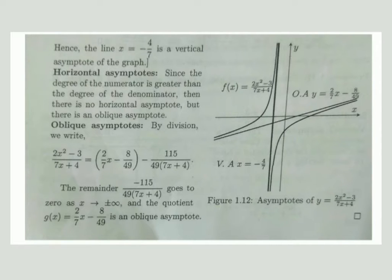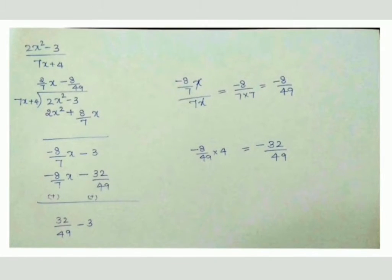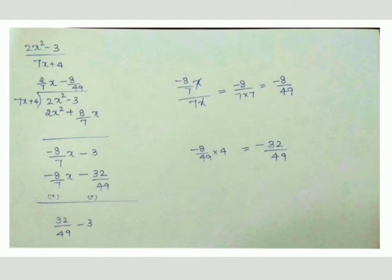Let us check for the oblique asymptote by dividing 2x² - 3 by 7x + 4. We need to find the quotient and the remainder. The first term of the quotient will be (2/7)x. Multiplying (2/7)x by (7x + 4) gives 2x² + (8/7)x. Subtracting: 2x² cancels, leaving -(8/7)x - 3.